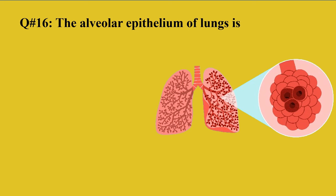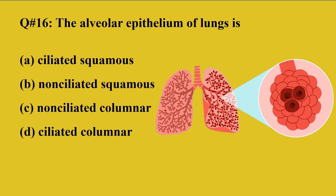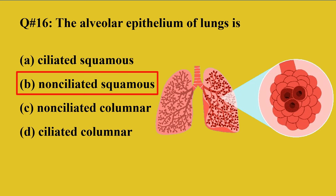Question number 16: The alveolar epithelium of the lungs is — A: ciliated squamous, B: non-ciliated squamous, C: non-ciliated columnar, D: ciliated columnar. The right option is B, non-ciliated squamous. The upper respiratory tract is ciliated, but the lungs are non-ciliated because gaseous exchange takes place there. If the lungs had cilia, it would interfere with gaseous exchange, so the lungs are non-ciliated to facilitate it.